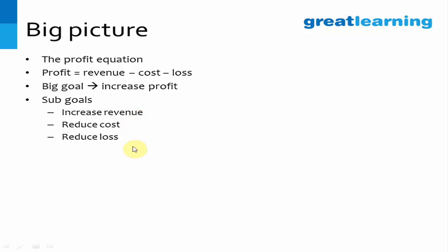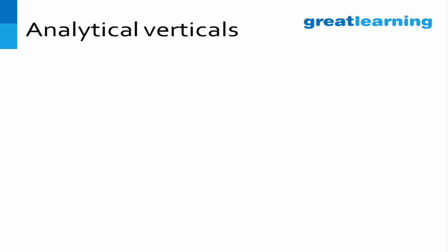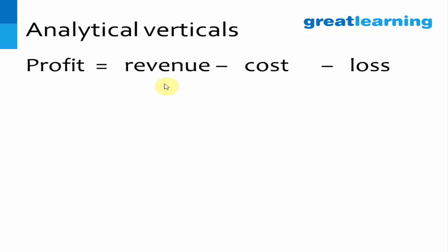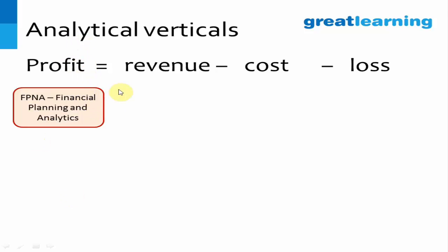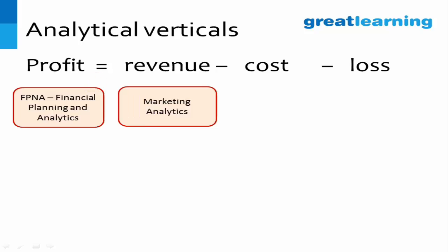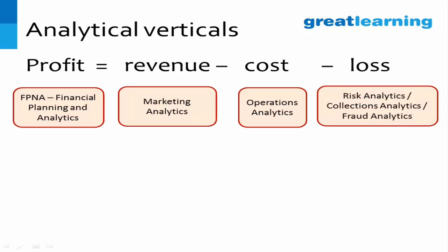The analytics vertical is also largely aligned around this profit equation. The vertical that keeps a tab on profit is called FP&A — Financial Planning and Analytics. The revenue-generating vertical is called Marketing Analytics, which is all about how you can generate more and more revenue. Cost is covered by Operations Analytics, and loss is addressed by three areas: Risk Analytics, Collections Analytics, and Fraud Analytics, each contributing to different sections of loss.